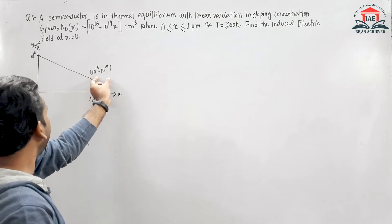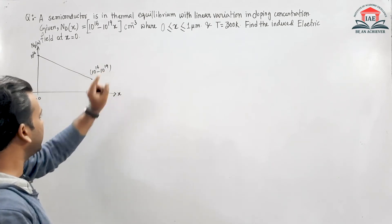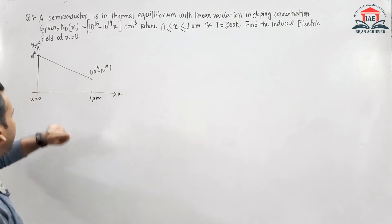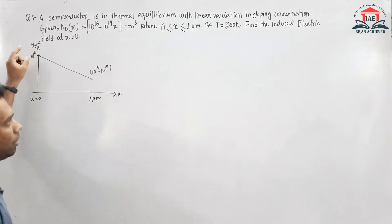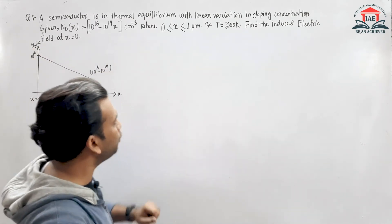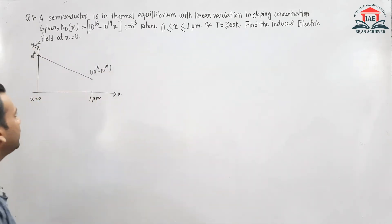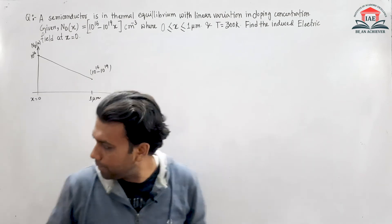Here we have Nd(x) value 10^16 - 10^19 at x = 1 micrometer, and Nd(x) value 10^16 at x = 0. We need to find the induced electric field at x = 0.